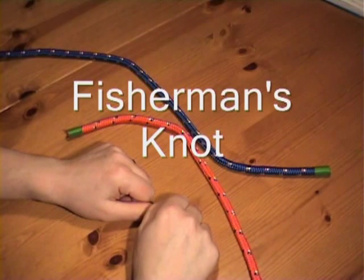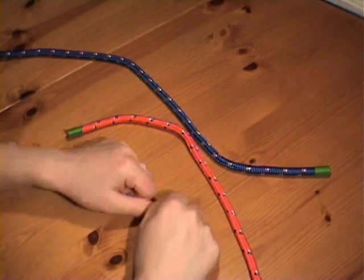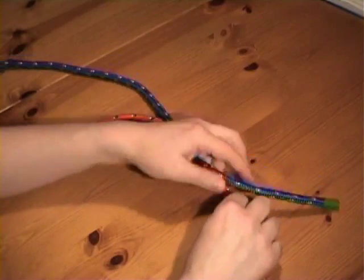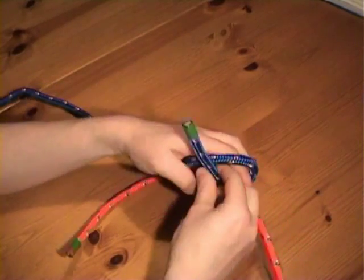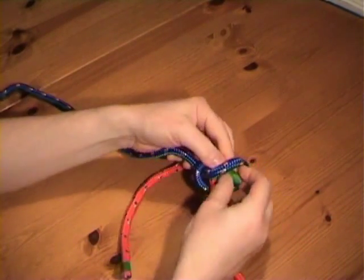Fisherman's knot. This is a simple yet effective knot, wherein each rope is tied to the other with an overhand knot. So we'll tie the first one, there.